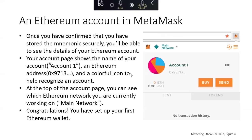Once you've confirmed you've stored your backup securely, you'll be able to see the details of your Ethereum account. We've got our newly created account — currently with zero Ethereum and no transactions. The account shows its name, in this case 0x9E73 and so on, and a little icon to identify it. At the top of the account page you can see which Ethereum network you're currently working on — the main network. Congratulations, you've set up your first Ethereum wallet.